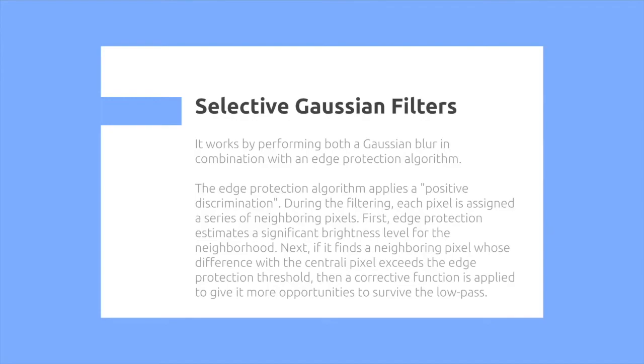Next, if it finds a neighboring pixel whose difference from the centralized pixel exceeds the edge protection threshold, then a corrective function is applied to give it more opportunities to survive the low-pass.